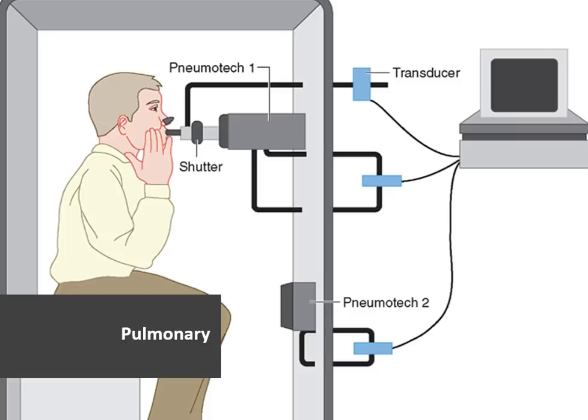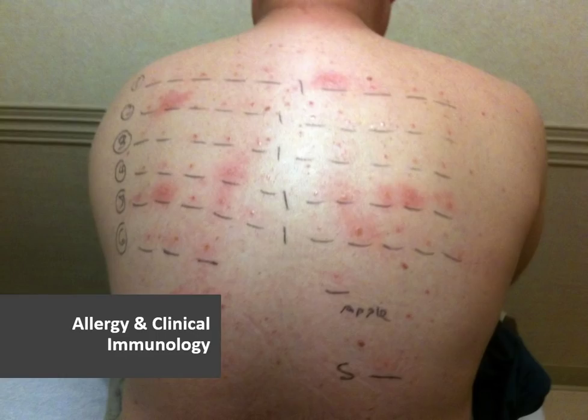Next, on page 689, we have our pulmonary section. Here you'll see things like breathing treatments and spirometry services — all for the lungs area. Again, make sure you're paying attention to subsection notes and parenthetical notes.